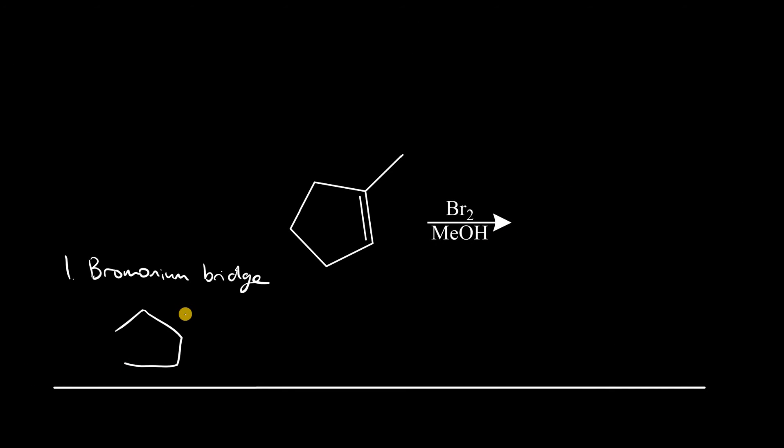Let's draw the starting material, which is methyl cyclopentene, and show mechanistically the breaking of the Br2 bond. Just like in step one in halogenation, the bond breaks, forming a partially positive bromine right here. That causes a nucleophile to electrophile reaction.